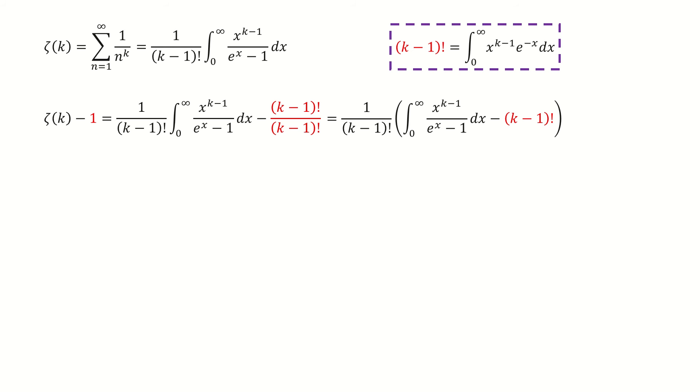Then for this red term, we can write it into the integral form. If you don't know why we can write it into this integral form, you can click here to see my previous video. In that video, I calculated this integral, which is the gamma function, and to show it equals to k-1 factorial.